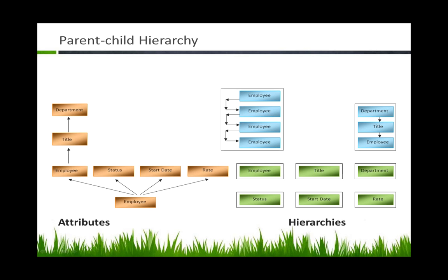We also have the idea of self-referencing or a parent-child hierarchy. A parent-child hierarchy is saying we don't really know how many levels there are going to be. We know that we've got people in our organization and one person reports to another person, and perhaps as somebody gets more senior, he becomes a team member and you're actually at another level. So you don't have a defined level of saying we know that it goes department, title, employee. We're just saying that person X reports to person Y, person Y reports to person Z, and we want to be able to navigate that quite easily in the cube.